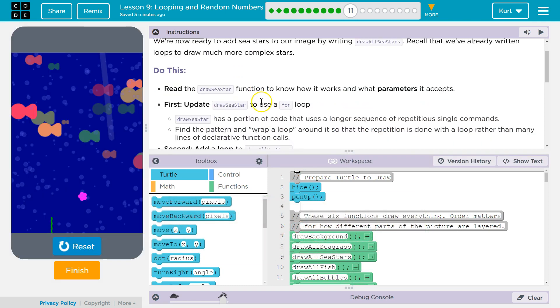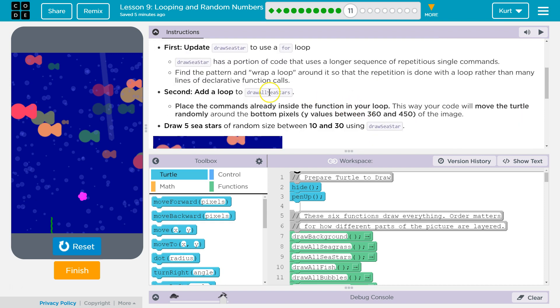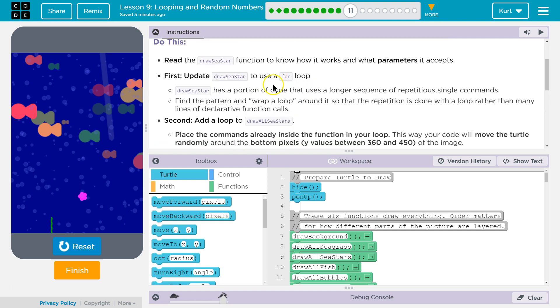Do this. Read the Draw All C-Stars function to know how it works and what parameters it accepts. First, update Draw All C-Stars to use a for loop. Draw All C-Stars has a portion of code that uses a longer sequence of repetitious single commands. Find the pattern and wrap a loop around it so that the repetition is done with a loop rather than many lines of declarative function calls. That sounds like a lot of lingo, but we can handle it. So first update Draw C-Stars to use a for loop.